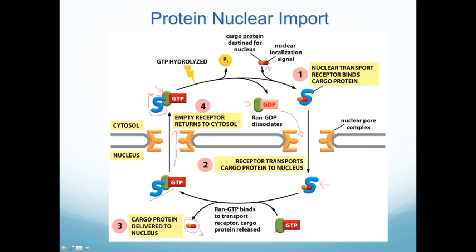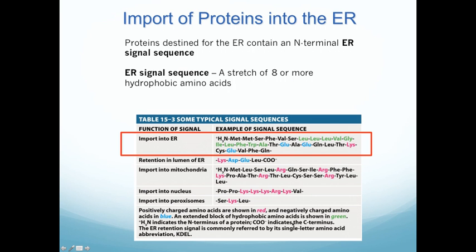For the exam, consider this question: if RAN-GTP were mutated so that it could no longer hydrolyze GTP to GDP, what do you think would happen to this cycle over time? That's something to think about for nuclear import.